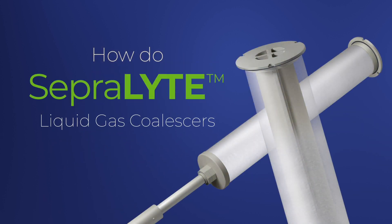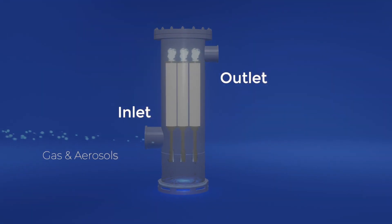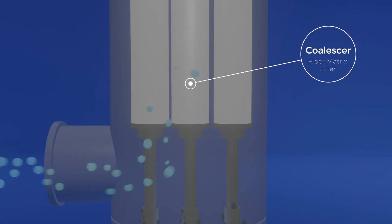How do separolite liquid gas coalescers work? When the liquid-laden hydrogen gas travels into the vessel, it flows directly into the coalescer's fibre matrix.